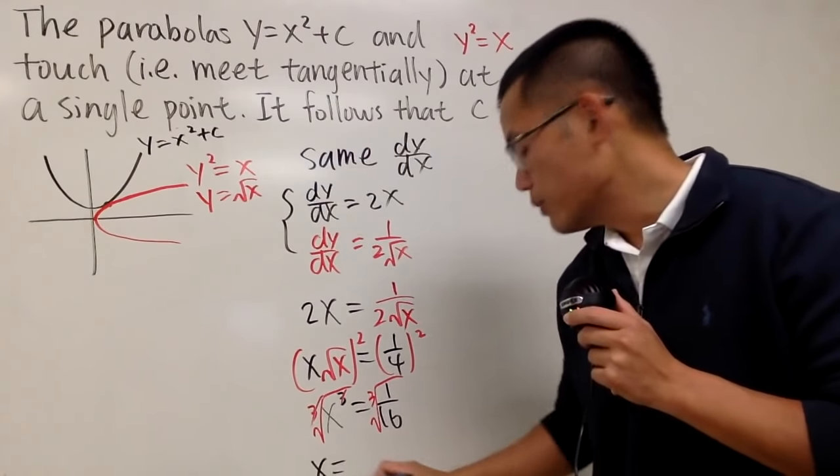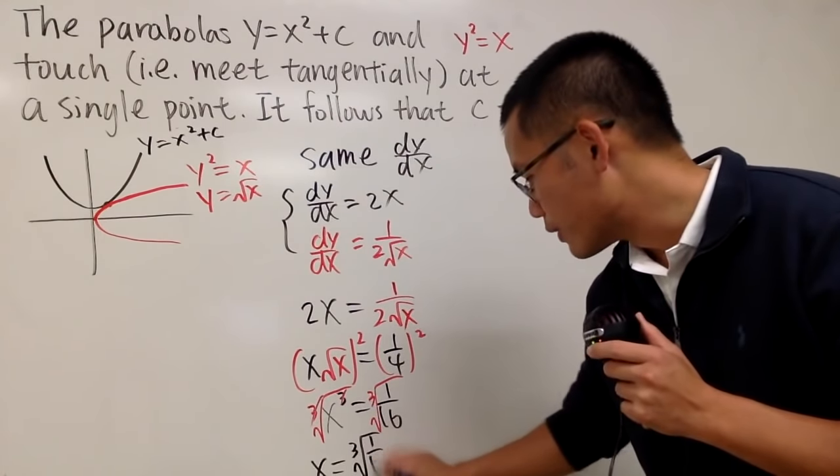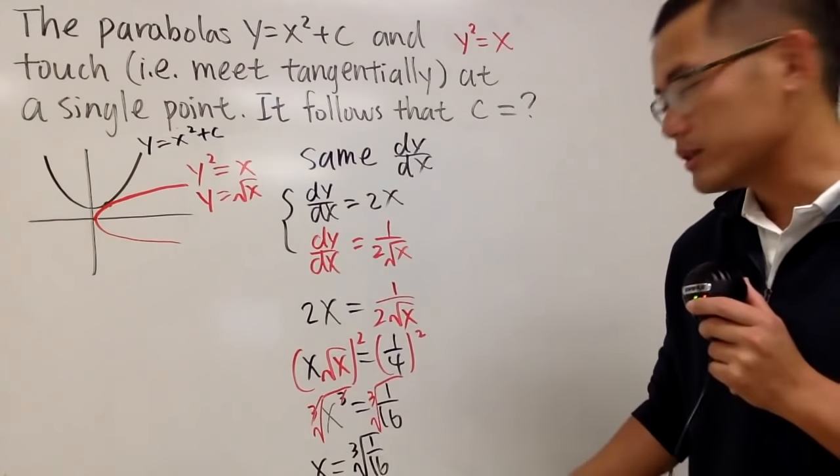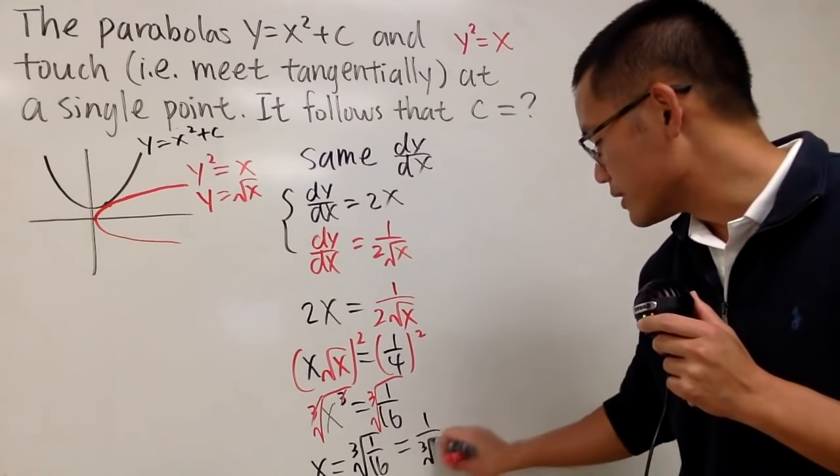Let me tell you, x is equal to the cube root of 1 over 16, like this. And of course, you can simplify this as well, which is 1 over the cube root of 16.